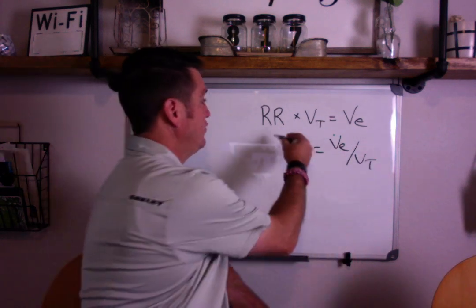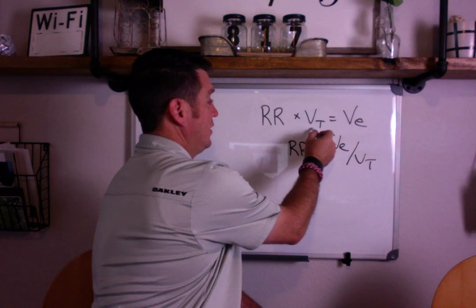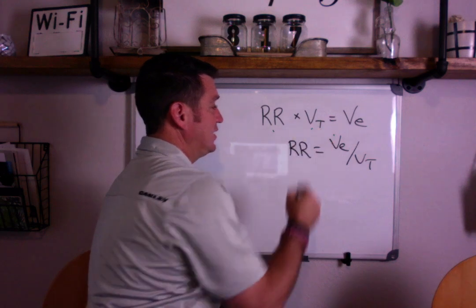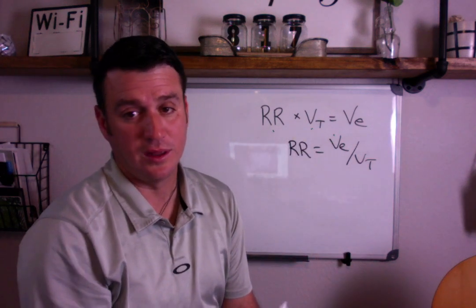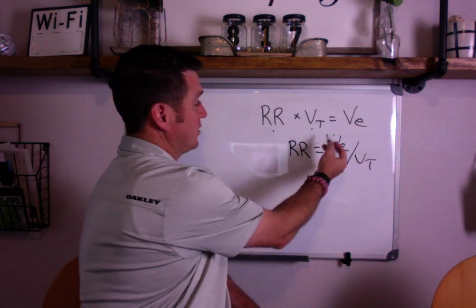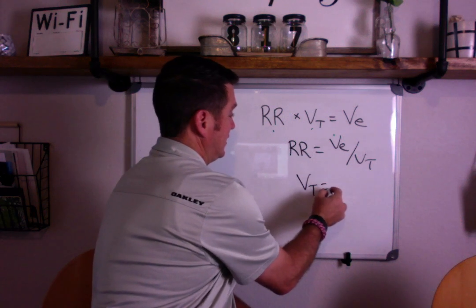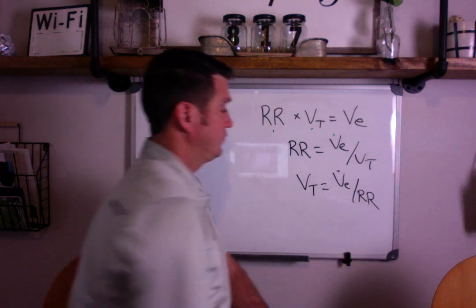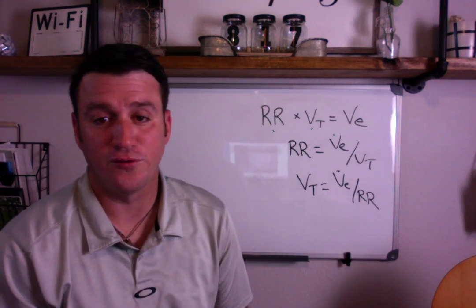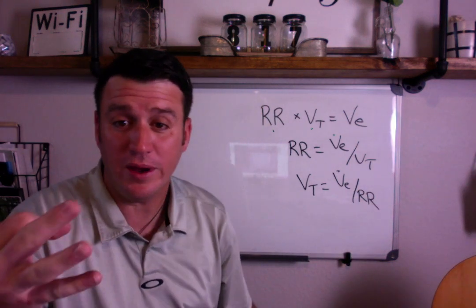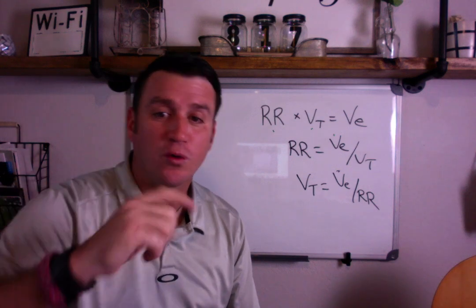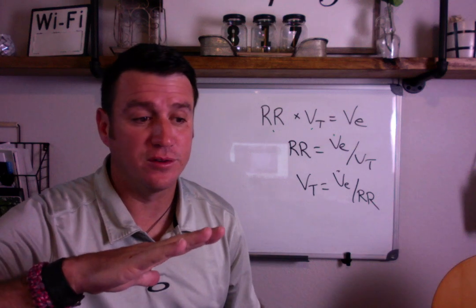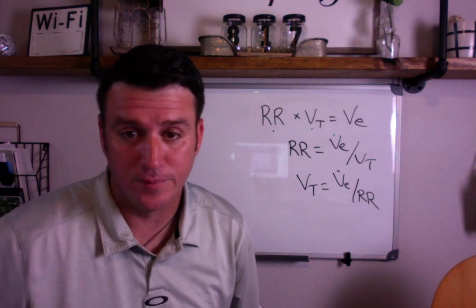And then the opposite way around, if you know your respiratory rate and you need to get your tidal volume, then you just divide both sides by respiratory rate. Those are your formulas, those are the three ways you can rearrange that formula to solve for whatever variable you're looking to solve for.